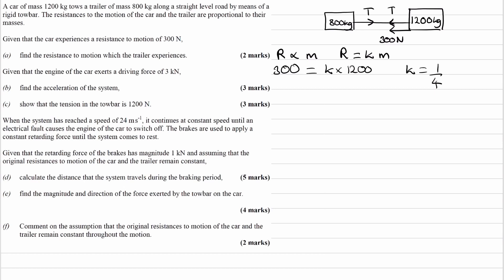Now that we have K, we can use that to work out the resistive force on the trailer. Using the same equation, the resistive force equals K, which is 1 over 4, multiplied by the mass of the trailer, 800. That gives us 200 newtons. So that's our answer to part A. We have a backwards force on the trailer of 200 newtons.